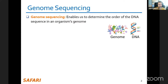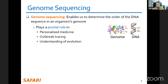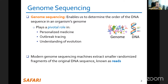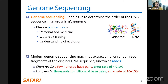Genome sequencing plays a central role in a wide range of applications such as personalized medicine, outbreak tracing, and understanding evolution. Modern sequencing machines extract small randomized fragments of DNA called reads, which have different properties depending on the sequencing technology — short reads of a few hundred base pairs or long reads from thousands to millions of base pairs. The error rate in these reads also varies considerably.